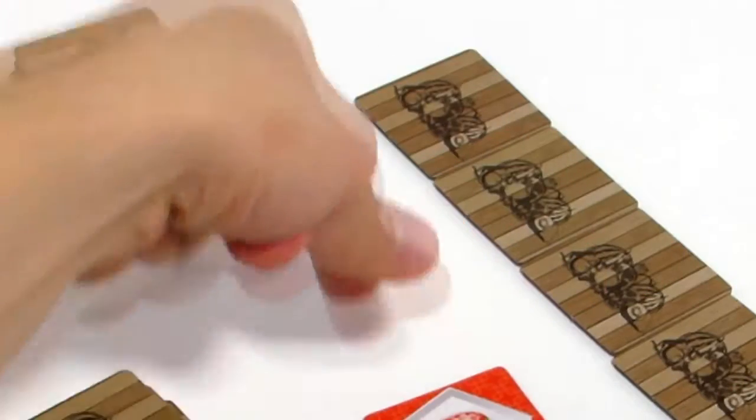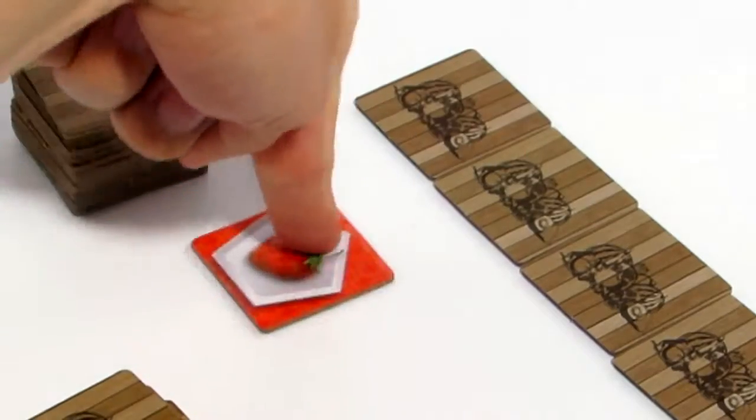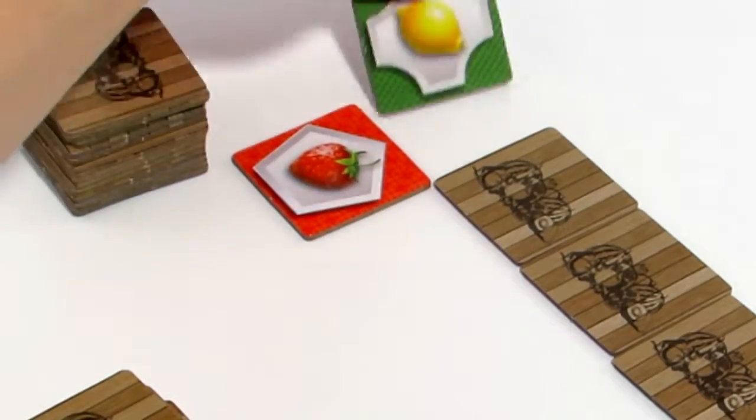During your turn, reveal your top tile. Place it below one of the tiles in the line and reveal that tile.